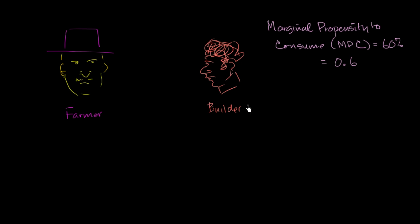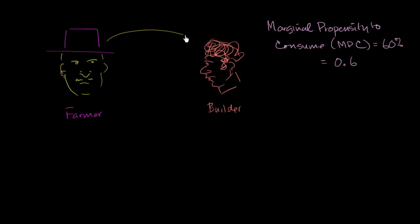Now, given this assumption, let's think about what would happen in this economy if one of them decided to increase their spending a little bit. We'll assume the economy was at a steady state. Let's say the farmer discovers a sock in a drawer he didn't realize was there, and it's got a little bit of their agreed-upon currency — the dollar. The farmer discovers a big pile of dollars and says, 'I'm going to spend $1,000. I need to do some repairs to my buildings.' So we have this increase in spending: the farmer is going to spend $1,000 and give it to the builder.